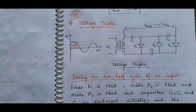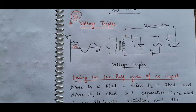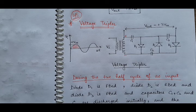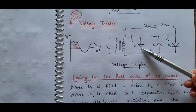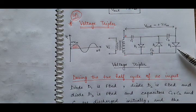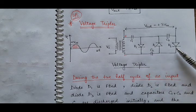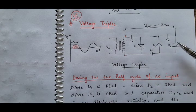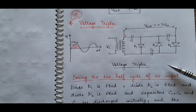In a voltage tripler, the output voltage becomes three times the peak voltage, that is plus 3Vm. We will use three capacitors C1, C2, C3 and three diodes D1, D2, D3 in the circuit. Assume that all three diodes are ideal and the capacitors C1, C2, C3 must be discharged initially before using them in this circuit.